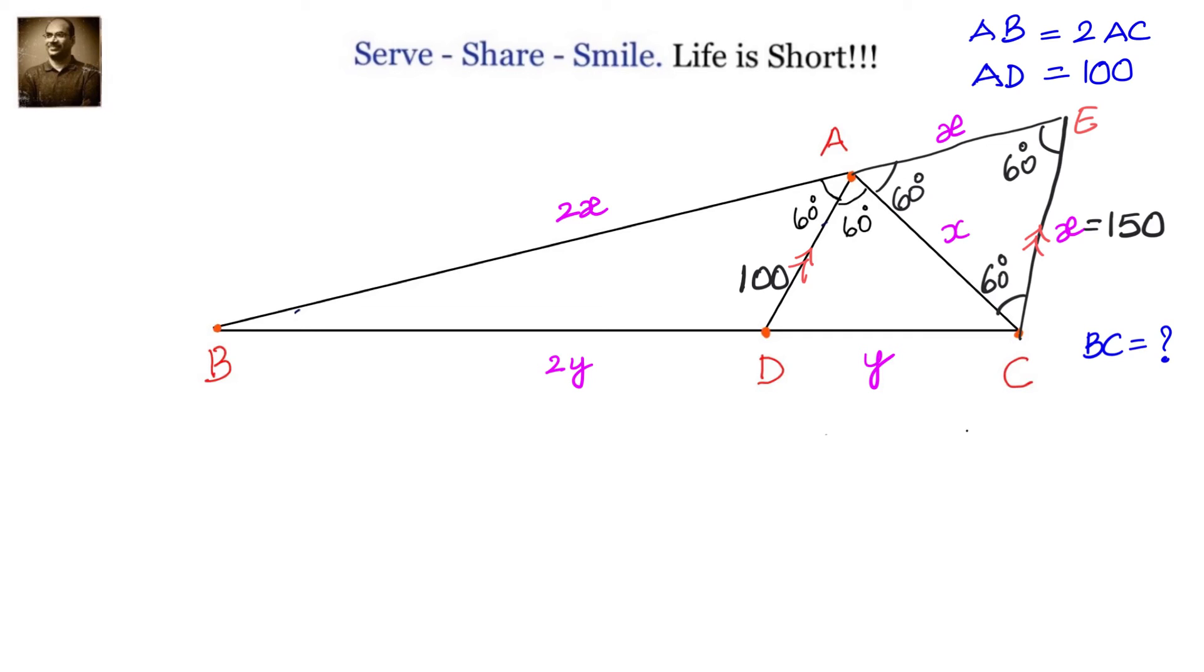So let us go to triangle ADC and try to find out what is the value of DC. Then we know that BC equals 3 times DC.